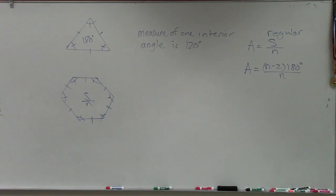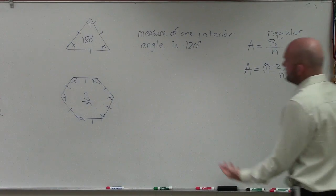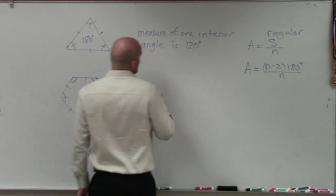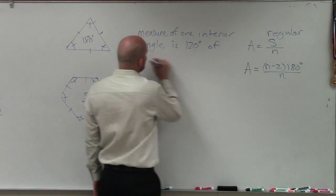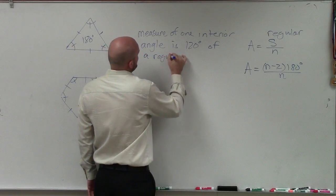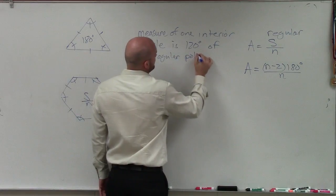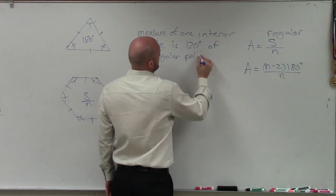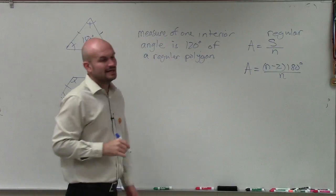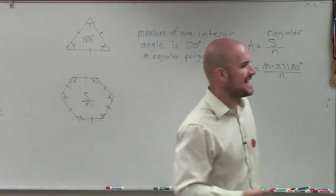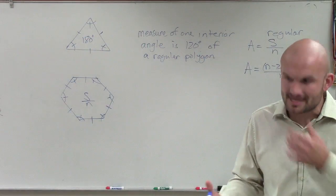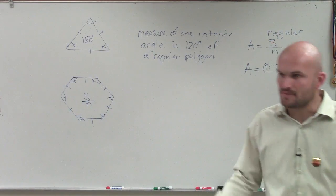OK, so on this example, it says the measure of one interior angle is 120 degrees, and that is of a regular polygon. So what we don't know is how many sides this polygon has. That's what they want us to tell. That's what they're asking us, is how many sides does this polygon have?